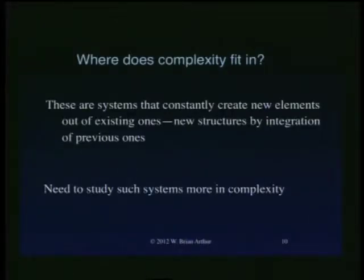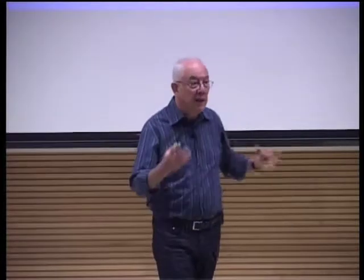These are systems that are constantly creating new elements or building blocks out of existing ones — new structures by integration of previous ones. Jacob's original insight. I learned this largely from John Holland, who always talked about integration of building blocks and combination. One thing I would say is that we've neglected this sort of system-building in complexity. An awful lot of complexity work has been about existing building blocks — think of cellular automata, where the beads in the kaleidoscope are always the same beads. There has been some work at Santa Fe on the buildup of such systems — the work of Eric Smith and Harold Morowitz on where organic chemistries came from in the first place.